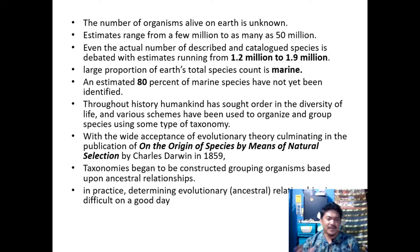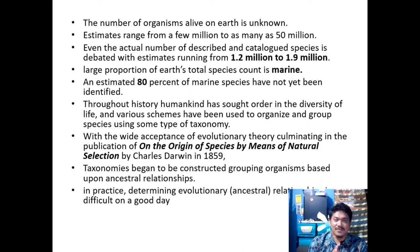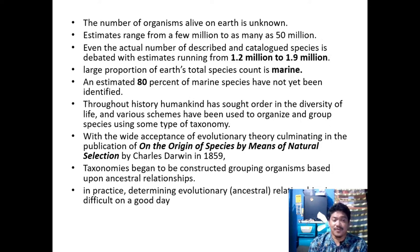Various schemes have been used to organize and group species using some type of taxonomy, because scientists wanted to make sure that identified species were organized in a systematic form. They tried to use groupings of various species of animals, both smaller ones and larger ones, as well as microscopic ones.